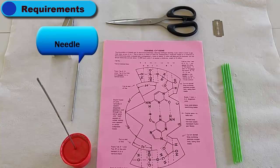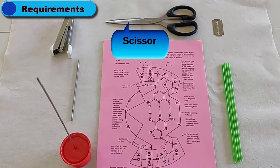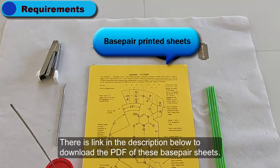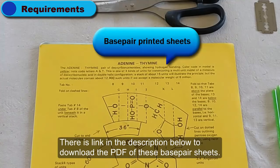Requirements: stacking support, wheeler, stapler, scissor, razor blade, and plastic straw. You can download these base pair printed sheets from the remote pillow.